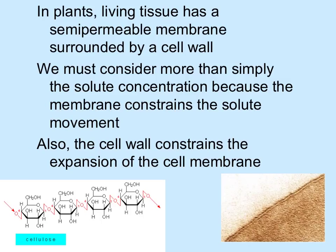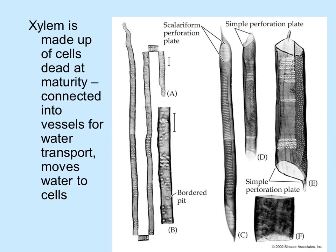The plant cell has a semi-permeable membrane inside a more rigid cell wall made of cellulose. We have to consider more than just the solute concentration, because the membrane itself constrains solute movement, and the cell wall constrains the expansion of the membranes. Shown here is a chemical diagram of cellulose, the polymer of glucose. The plant tissue that moves water is xylem, made up of cells that are dead at maturity, connected like little pieces of pipe into long pipes, picking up water from the roots and moving it into the cells.